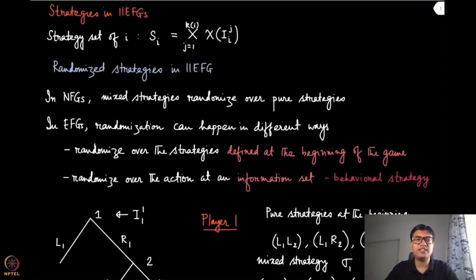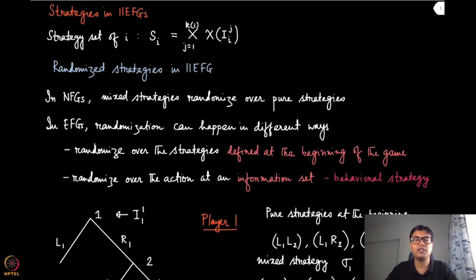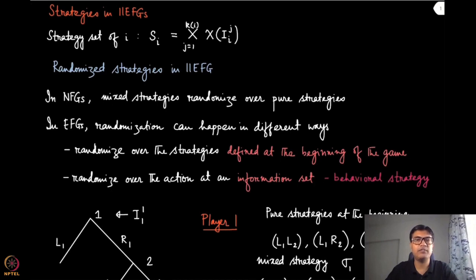In the context of extensive form games, we have so far discussed about pure strategies. We have not spoken about how we can mix the strategies or probabilistically pick these strategies. Unlike the normal form games where there was only one kind of randomization available — you have the set of pure strategies and you are randomizing, picking any of those strategies in a probabilistic manner, which we call the mixed strategy.